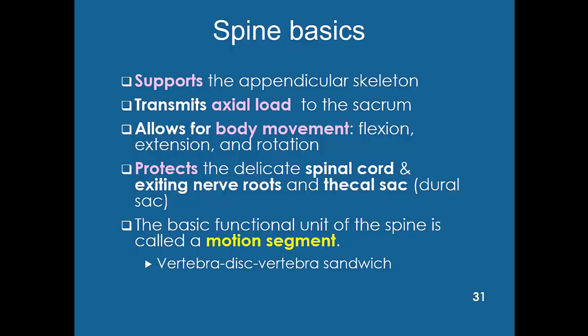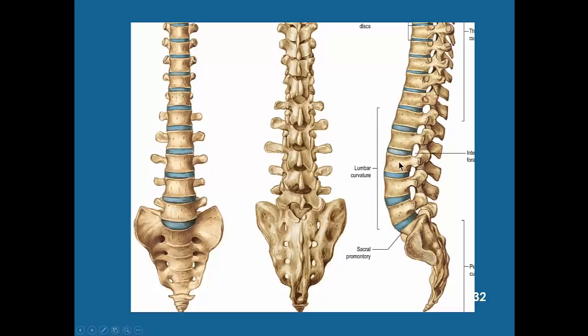A motion segment is a vertebra-disc-vertebra sandwich. Here's L3 vertebra, the L3 disc, and the L4 vertebra — specifically the vertebral bodies, but don't forget the rest of the vertebra in the back. Here's an AP view and a PA or posterior-to-anterior view — also called coronal images, which is a view from the front. A lateral view is also called a sagittal view. There's the auricular surface of the sacrum meeting the auricular surface of the ilium — that's the SI joint.